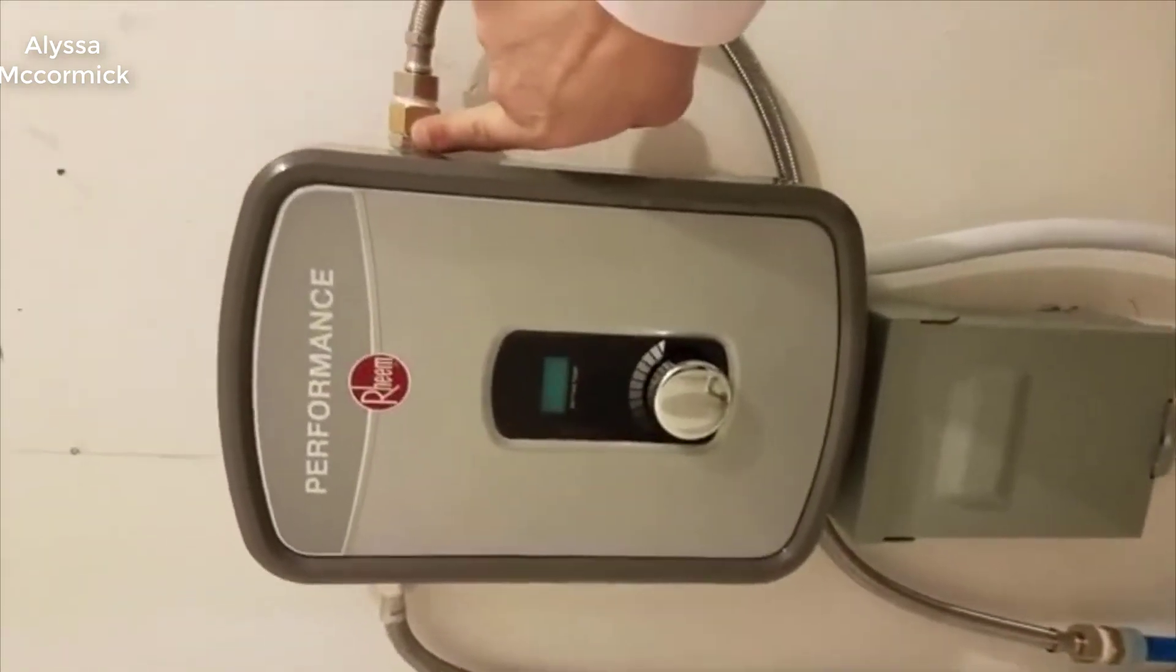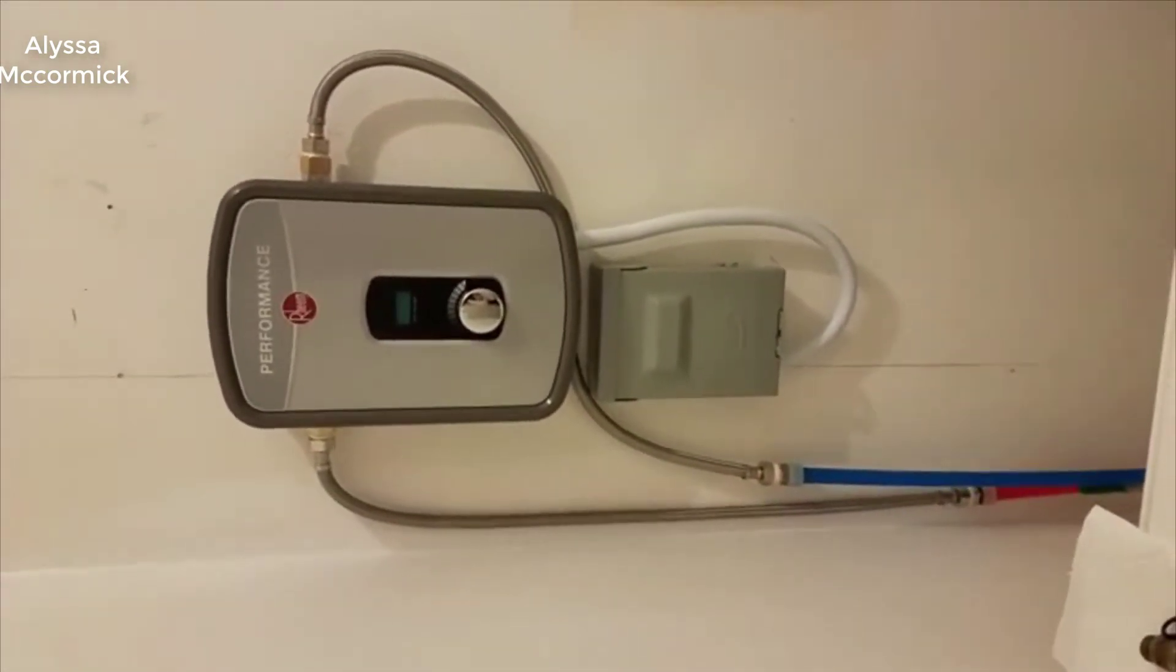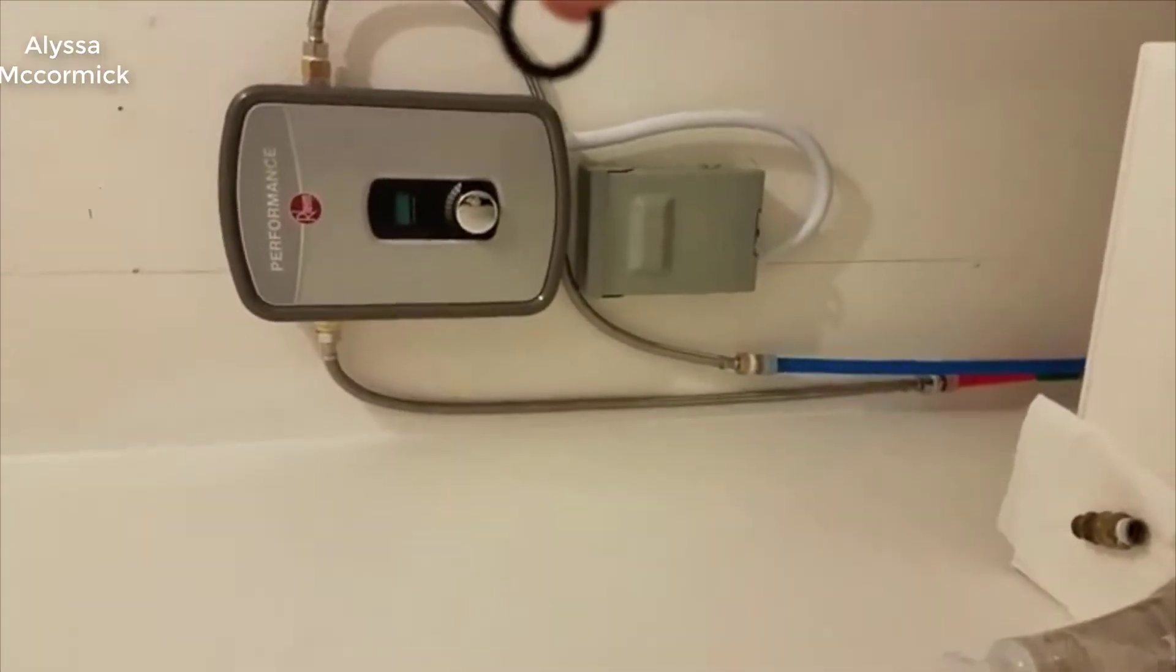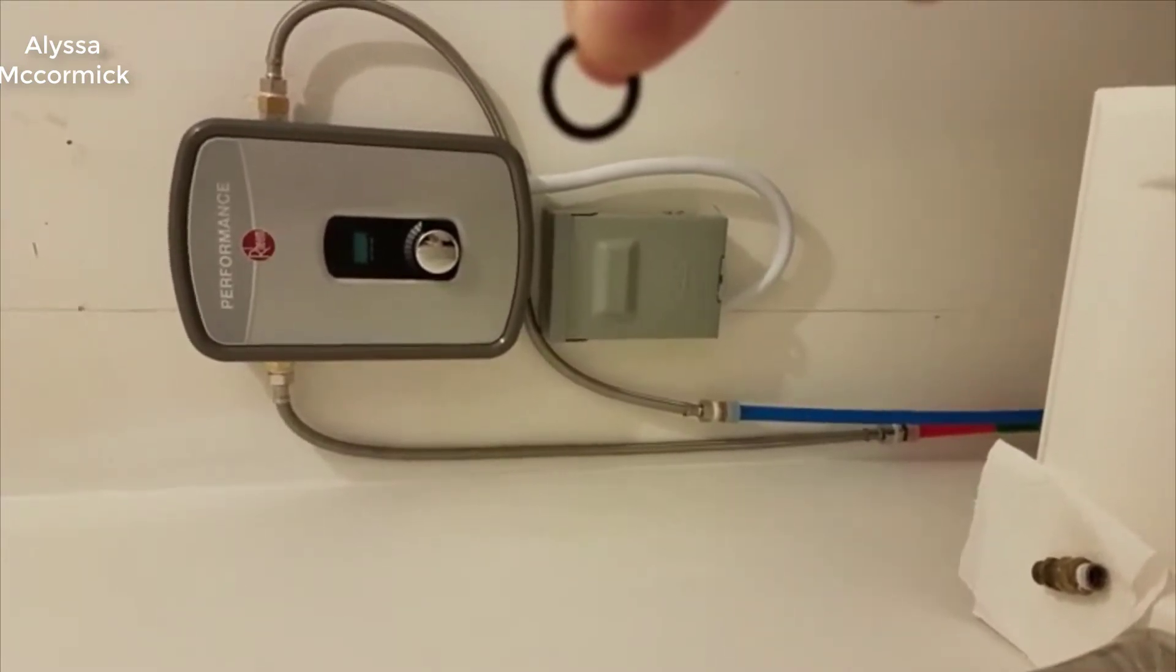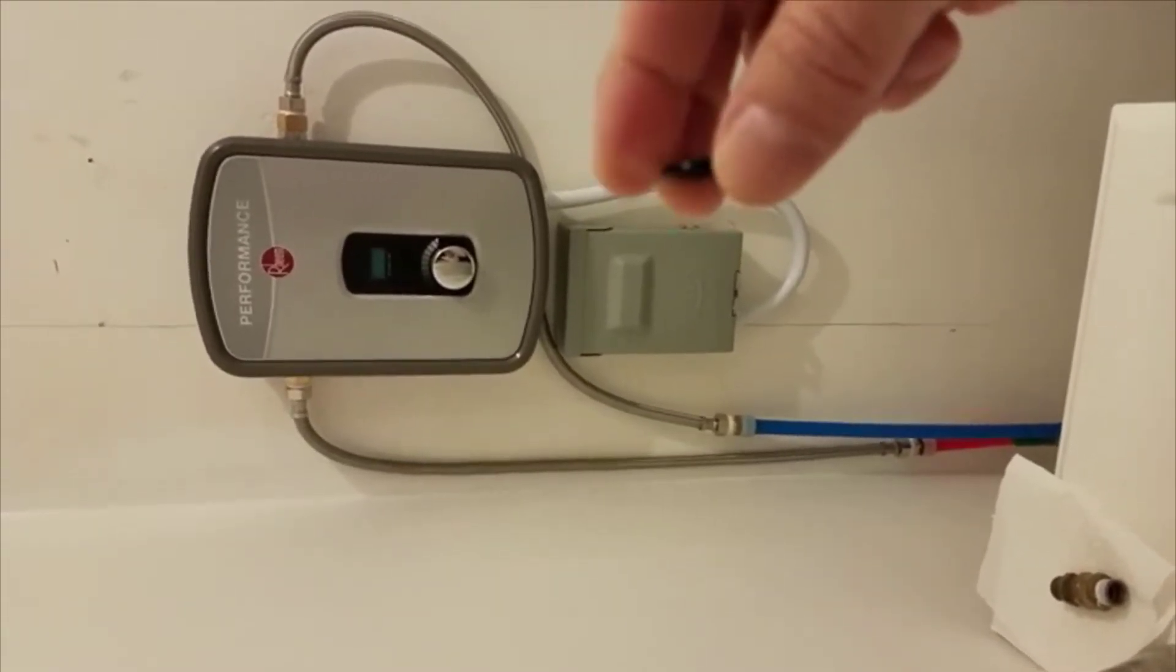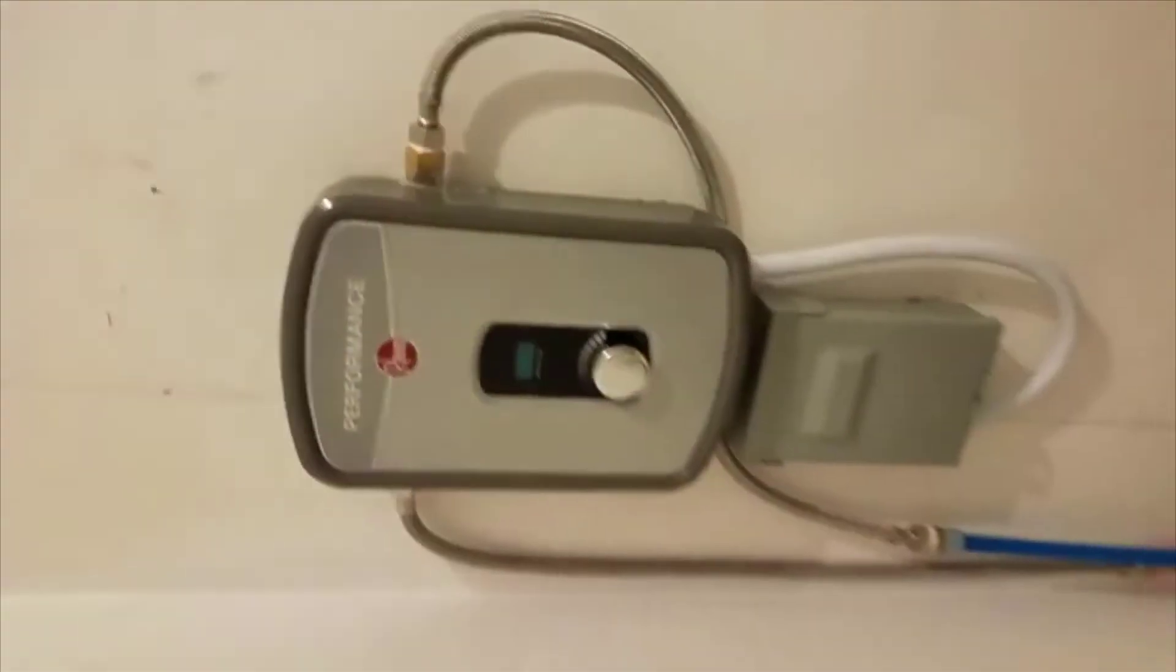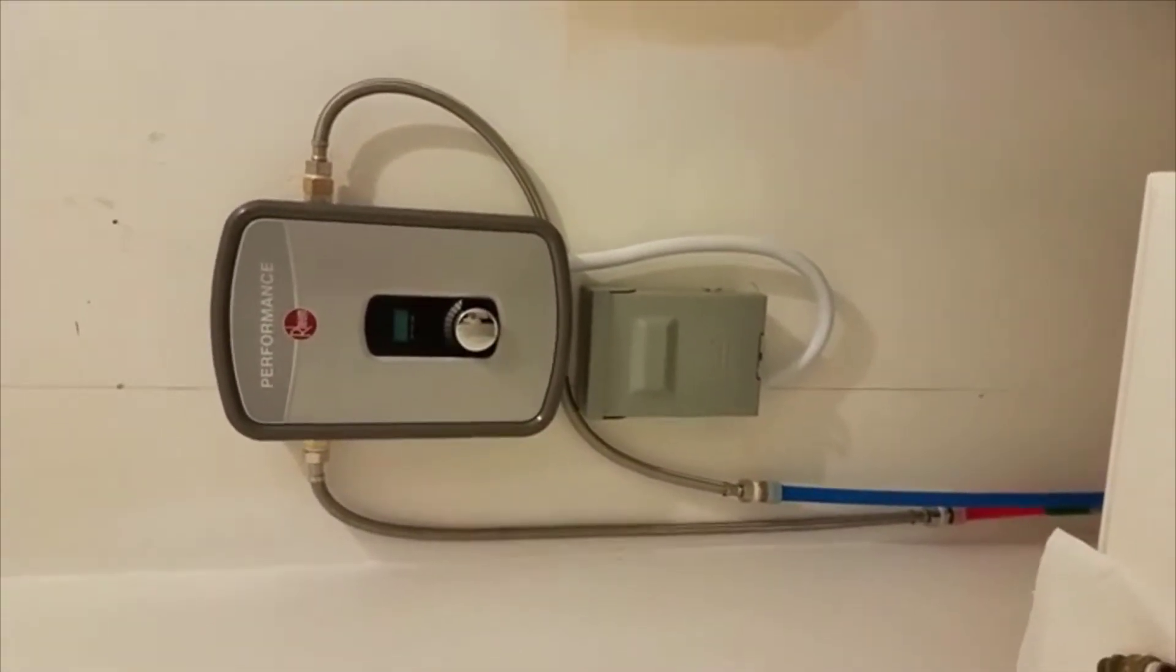The nice thing is they're super energy efficient. You're going to save a lot of money because with a tanked water heater, you have to keep this big thing of water heating all the time—30 or 50 gallons hot 24/7, 365. Whereas this one only runs when you're using water. If you're not using water, it's using zero energy. It actually uses a lot of energy to keep 50 gallons heated to 120 degrees, so you save a lot in your utility bills.